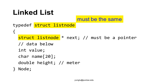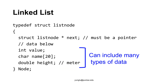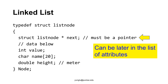At the end of this new type, we add a name called node. This is a new data type. From now on we can use node as a data type, and node may include many different types of data. In this example, the data includes an integer, an array of 20 characters, and a double. The pointer is the first attribute of the structure, but it does not have to be the first — it can be moved later in the structure with no difference.